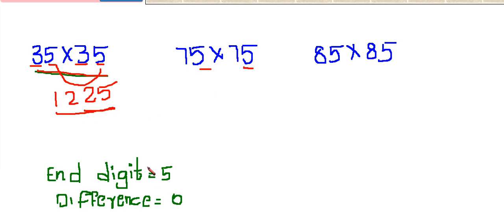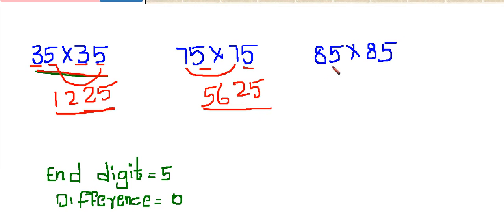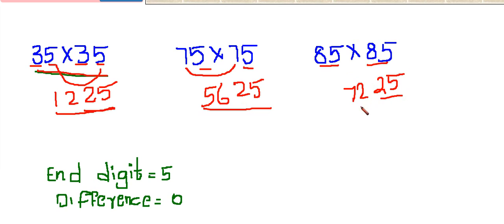Here also these two numbers are ended with 5, both numbers are the same, and their difference is 0, so we can use this trick. The first two digits are 5 into 5, which is 25. And 7 into the next digit of 7, that is 8. So 7 into 8 equals 56. So 5625 is the answer. Similarly, 5 into 5 is 25, and 8 into the next digit of 8, that is 9. 8 times 9 is 72. So 7225 is the answer.